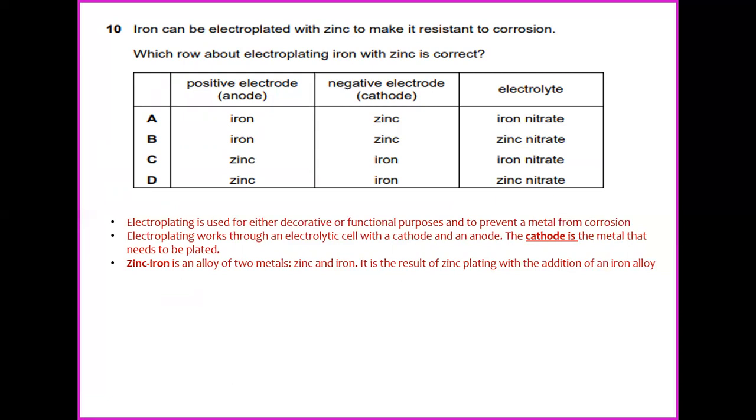Zinc iron is an alloy of two metals, zinc and iron. It is the result of zinc plating with the addition of iron alloy. So the answer for this is D: zinc, iron and zinc nitrate.